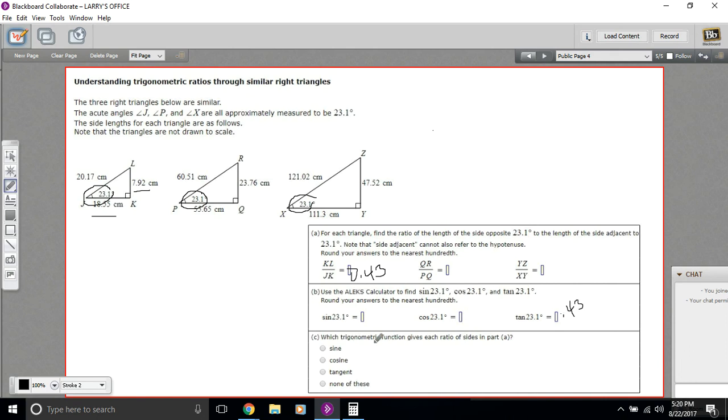And then it asks which trigonometric function gives each ratio of sides in part A. And the ratio is the tangent because it's opposite over adjacent. So that's a little bit of work in understanding trigonometric ratios.